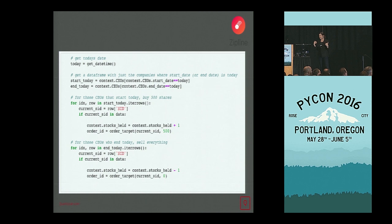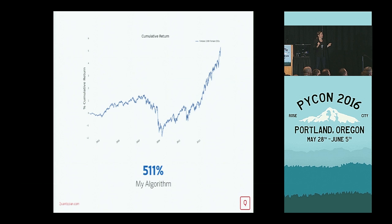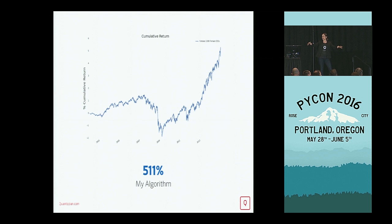After what felt like weeks of work, I got the data clean, everything working, pressed go on my backtest, and it actually ran without an error. This is what my return chart looks like — my strategy investing in 500 shares of Fortune 1000 female CEOs. It was about 8 o'clock at night. My strategy went up and to the right. I work in startups — up and to the right is always good. I mic dropped, walked out of the office, patted myself on the back, thought I was a rock star.